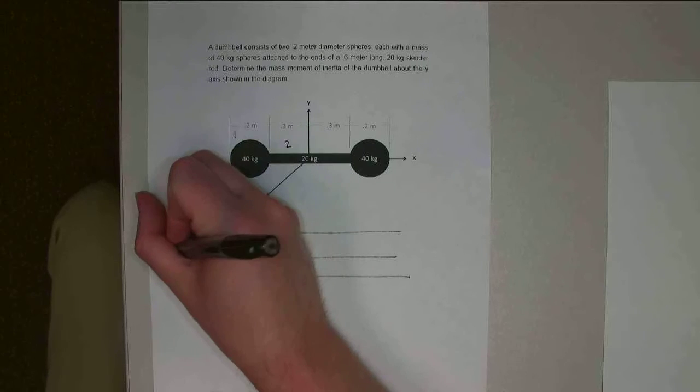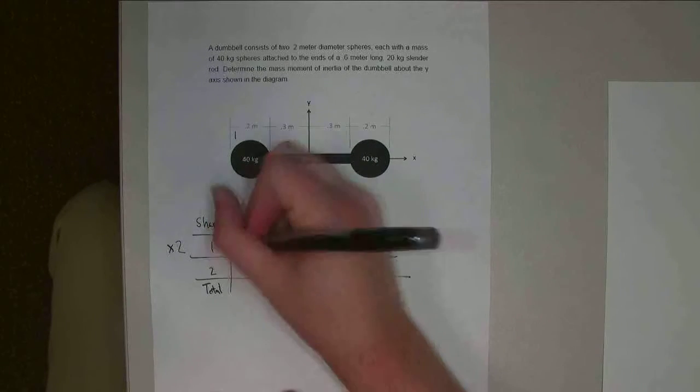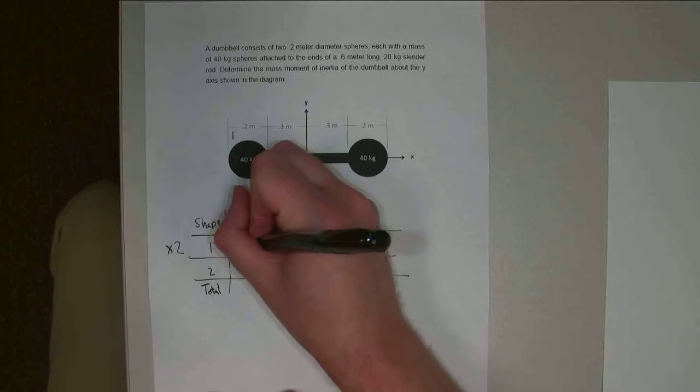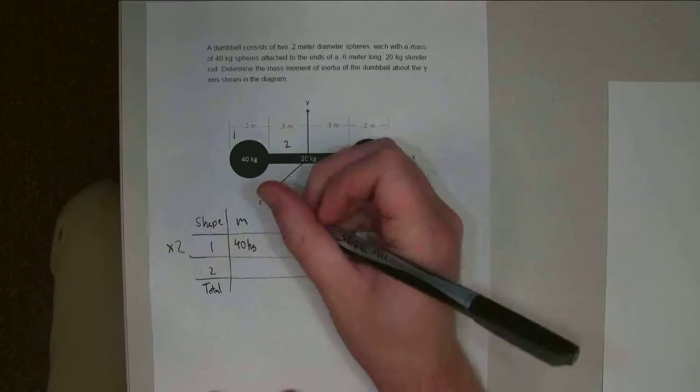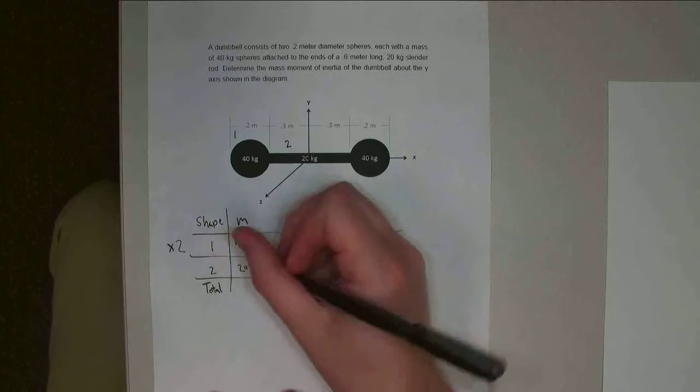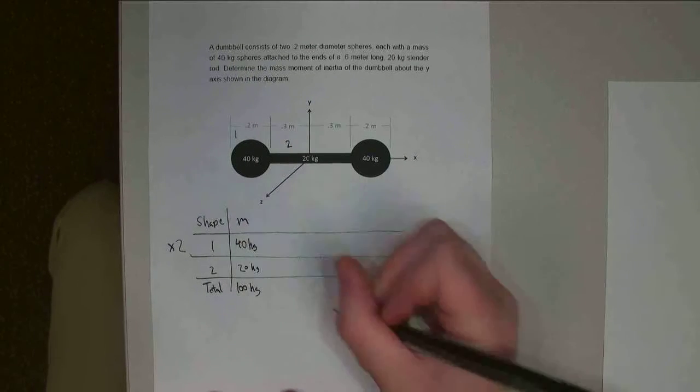And this one, I'm going to say times two, because I've got a 40-kilogram sphere on each side. All right, so each piece, I've got the mass, so this is 40 kilograms, each one of them. This is 20 kilograms, and so the overall mass is at 100-kilogram dumbbells.